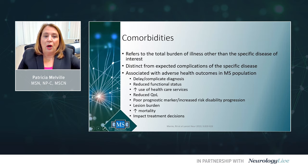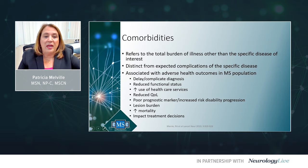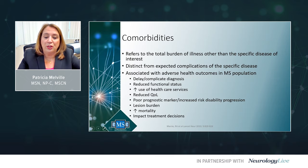Comorbidities refer to the total burden of illness other than the specific disease of interest. They are distinct and separate from the expected complications of the specific disease. MS patients have adverse health outcomes associated with comorbidities, some of which include delay and complications of diagnosis, reduced functional status, increased utilization of health care services, and reduced quality of life. Comorbidities are a poor prognostic marker, and MS patients are at increased risk of disability progression. They have a negative impact on lesion burden, increased mortality rates, and they impact treatment decisions.